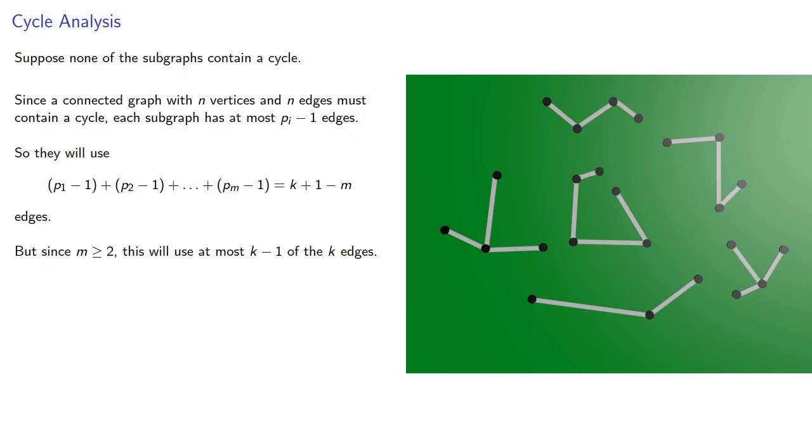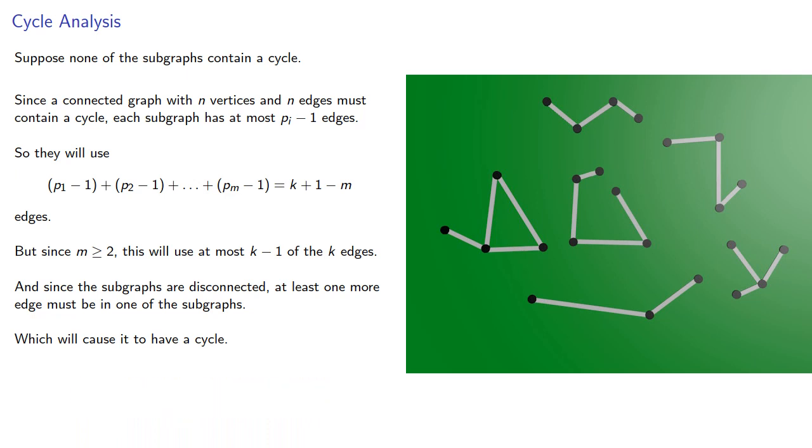So that last edge has to go somewhere. Since the subgraphs are disconnected, at least one more edge must be in one of the subgraphs, which will cause it to have a cycle. No, no, that's a good thing. That's what we were trying to prove.